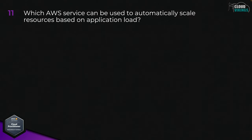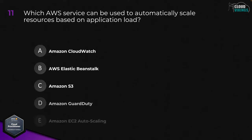Question eleven: which AWS service can be used to automatically scale resources based on application load? Options are: A, Amazon CloudWatch; B, AWS Elastic Beanstalk; C, Amazon S3; D, Amazon GuardDuty; or E, Amazon EC2 Auto Scaling. The correct answer is E, Amazon EC2 Auto Scaling.